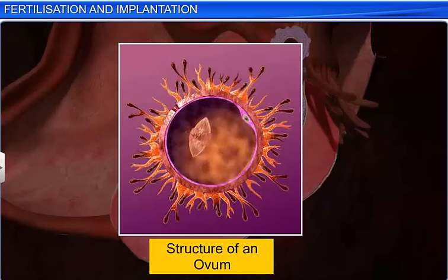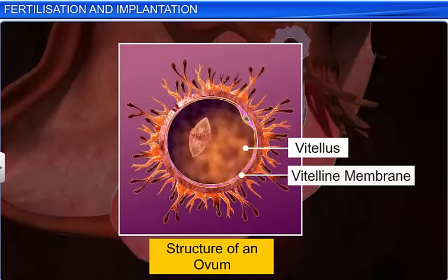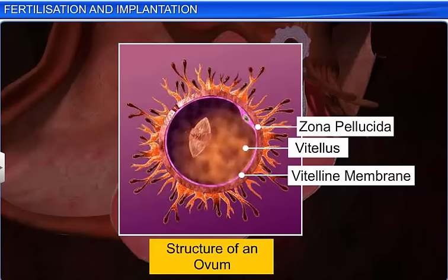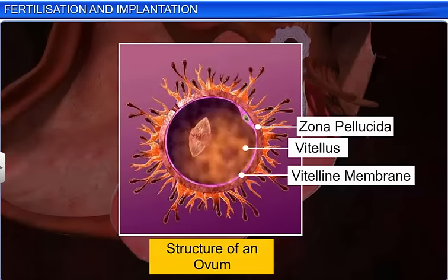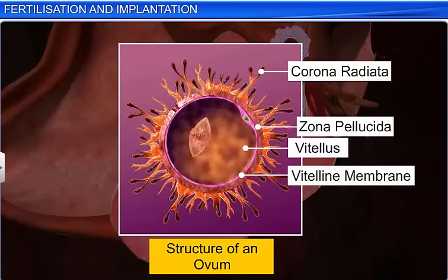Studies have shown that the ovum is filled with cytoplasm called the yolk, or vitalis, surrounded by a membrane called the vitelline membrane. The vitelline membrane is ensconced in another membrane called zona pellucida. However, there is some space between the zona pellucida and the vitelline membrane, which is called the perivitelline space. Surrounding the zona pellucida is a layer of granulosa cells called the cells of corona radiata.